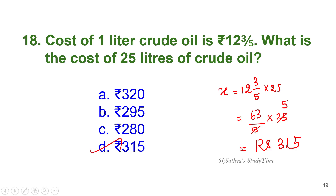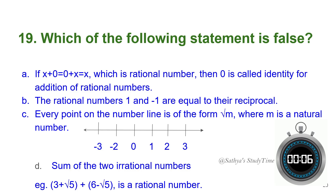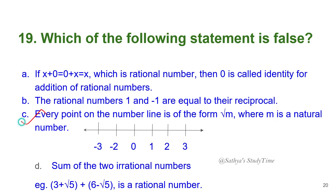Nineteenth question: Which of the following statements is false? The answer is option C. Options A, B, and D are true; option C is the false statement.